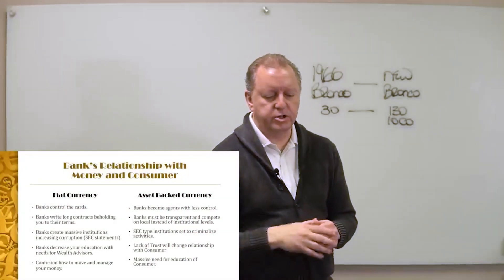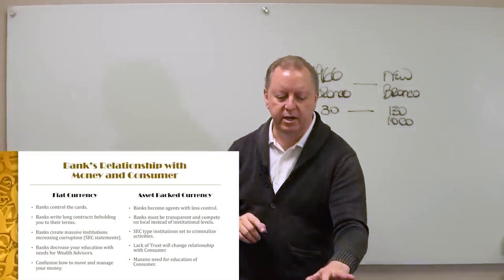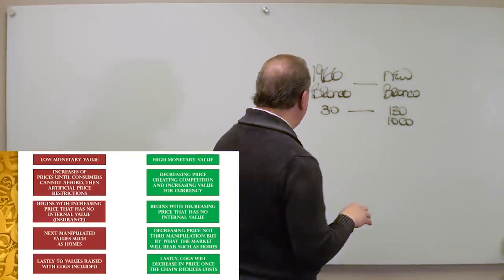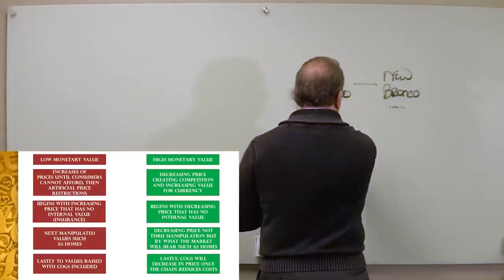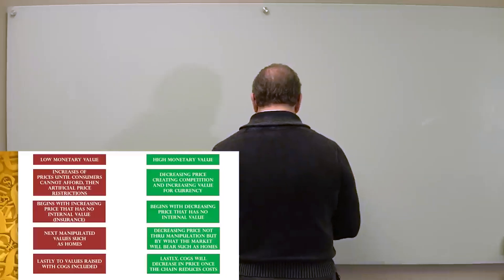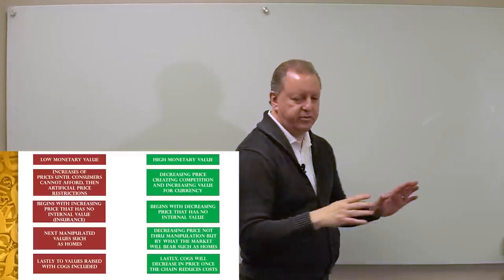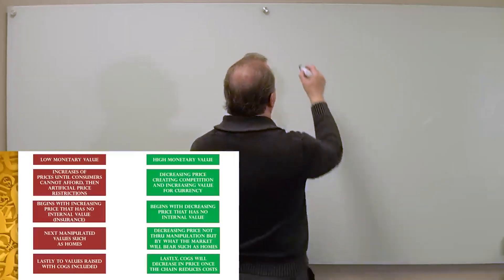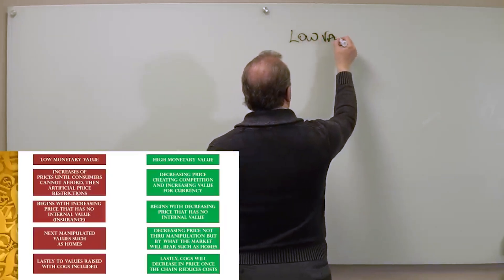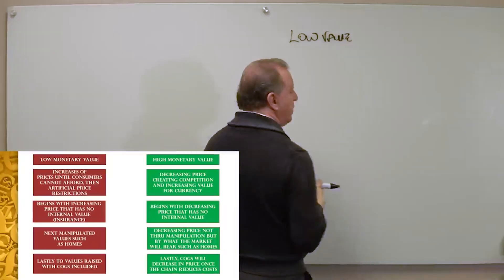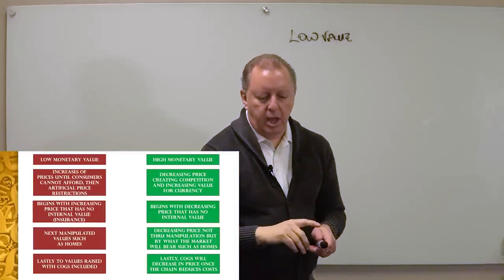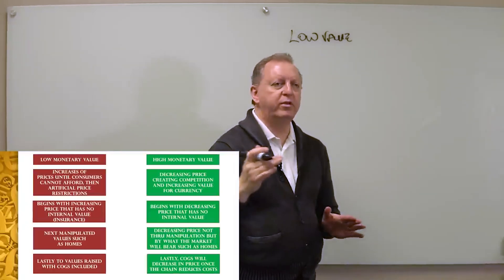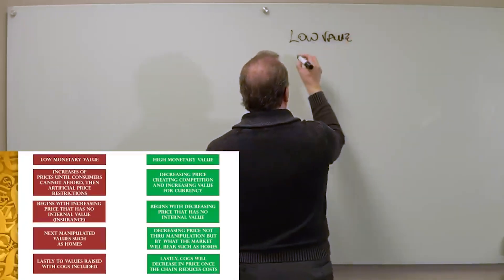Let's look at our next screen. I want you to see the value points that come out here. When we're in the value system of fiat money, which is the red line, we have a low value of money, so we have a low value at the top.